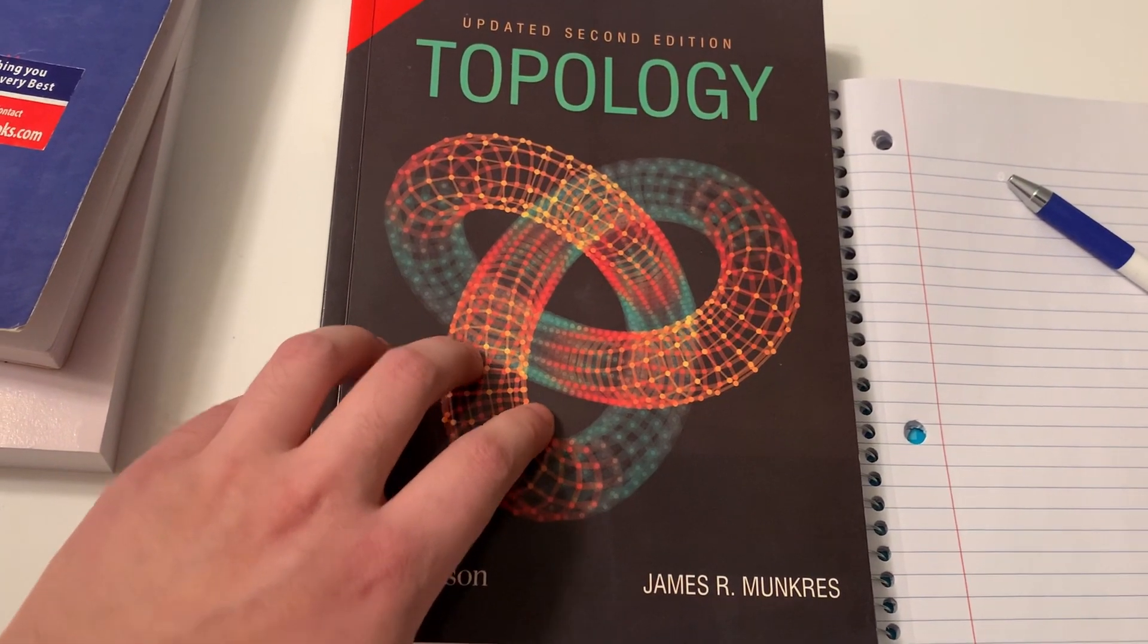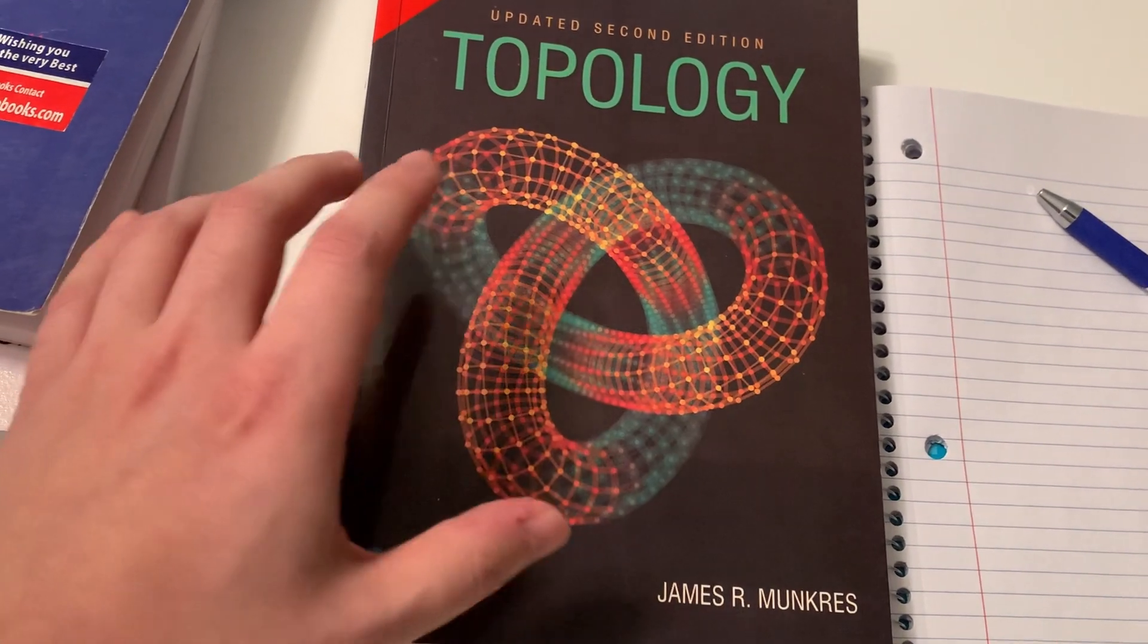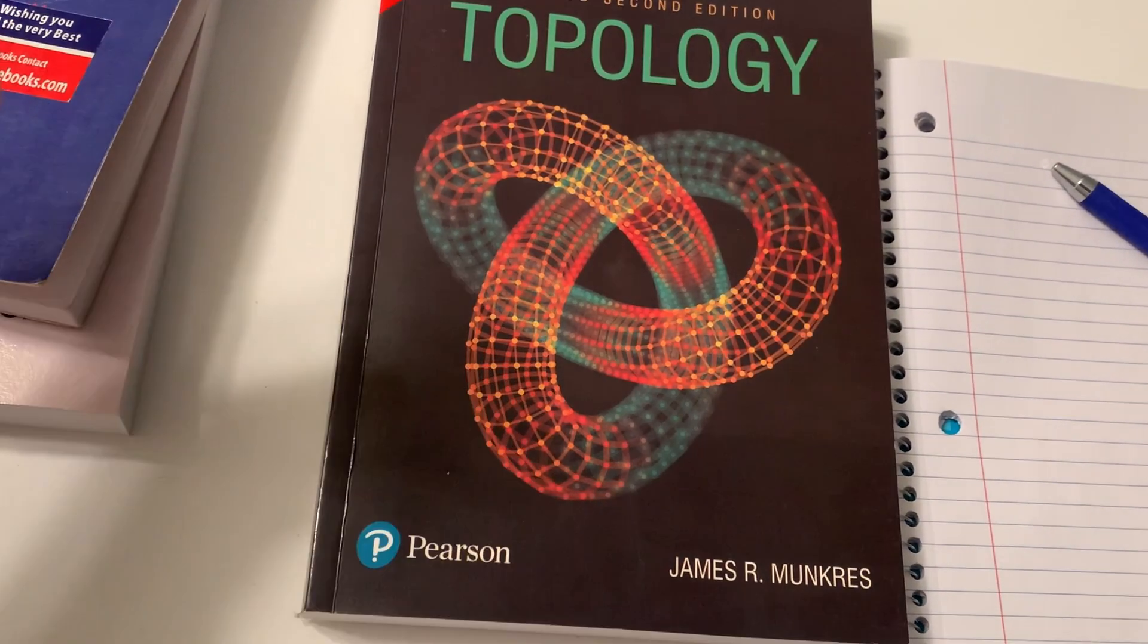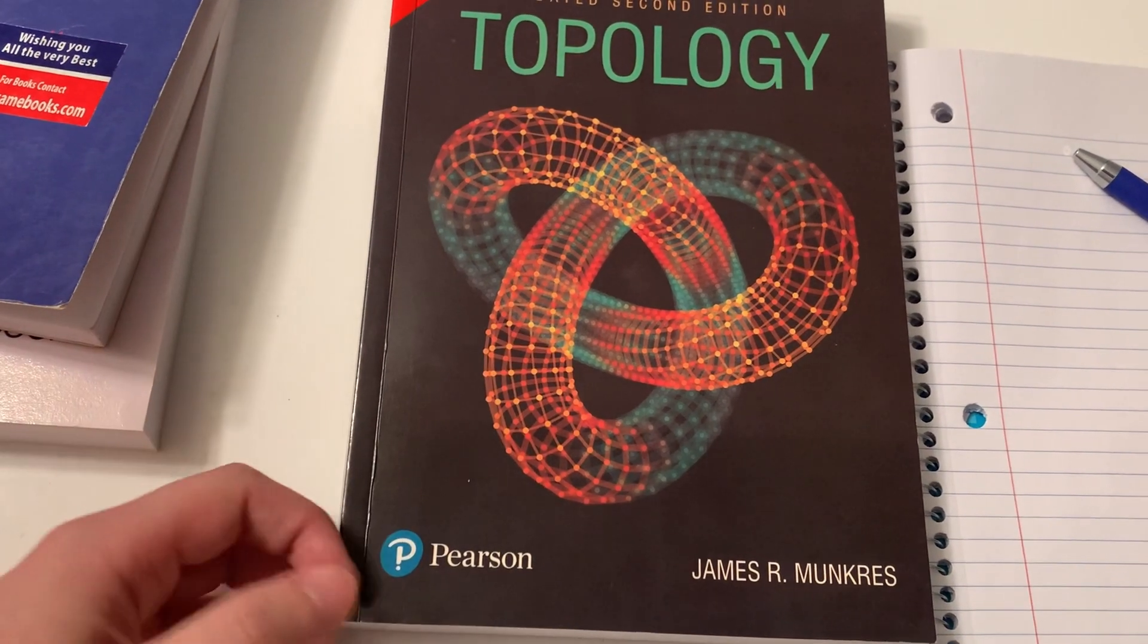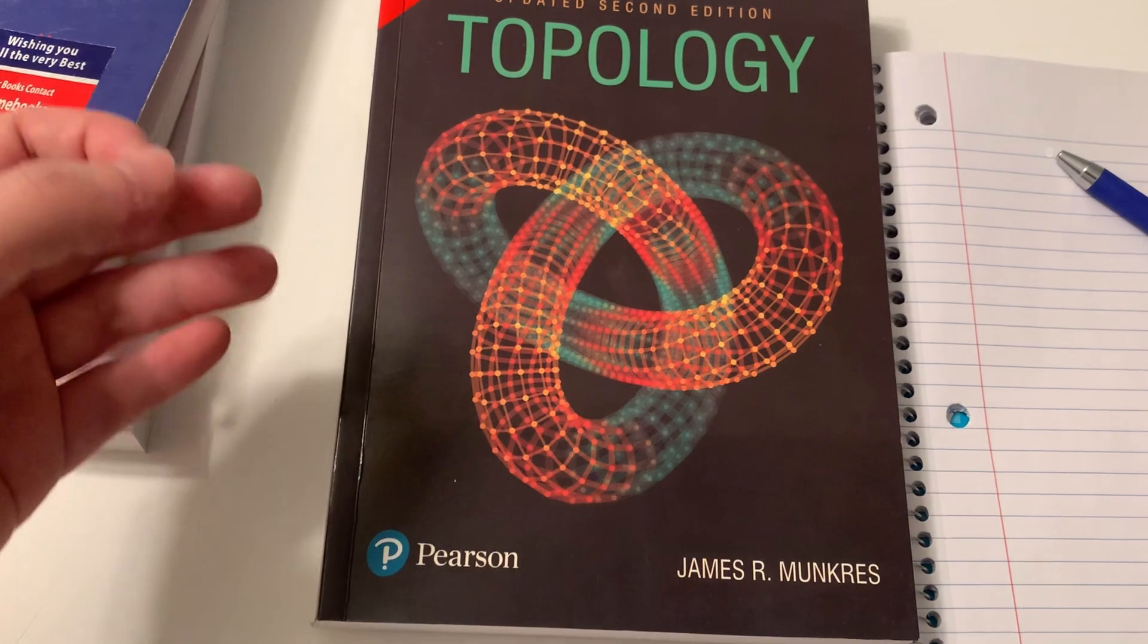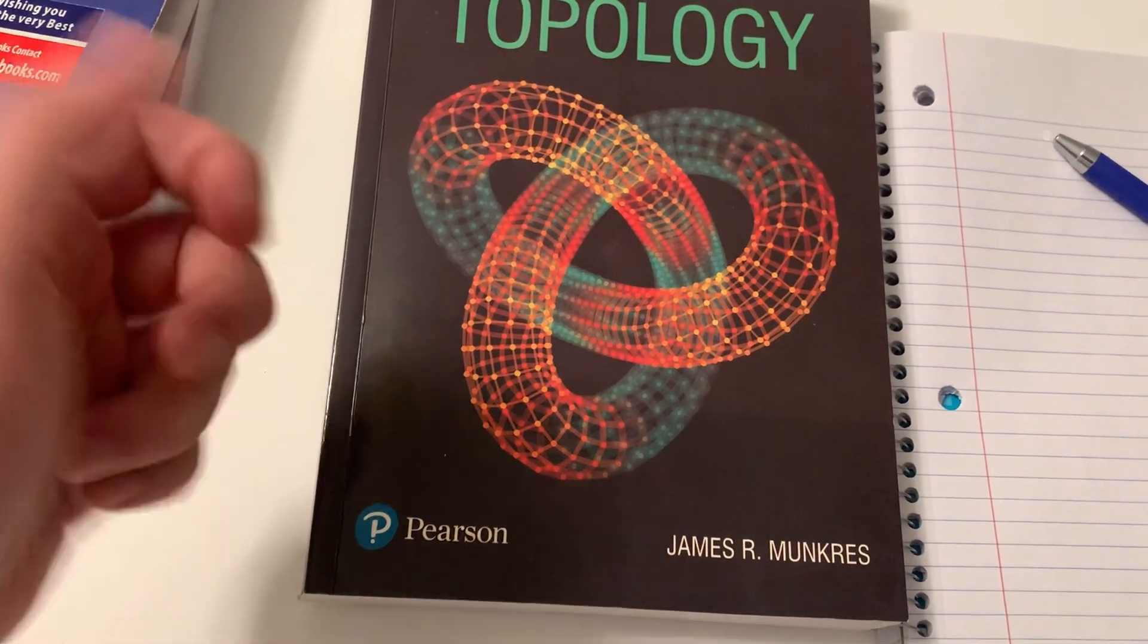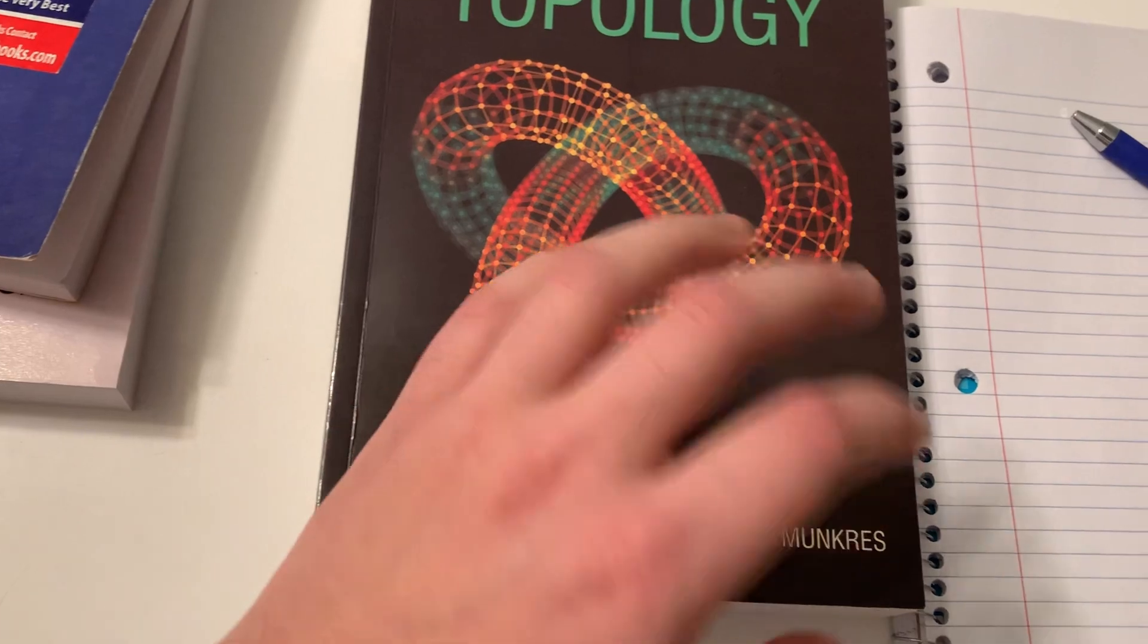So in the first book, Topology by Munkres, every exercise is at the end of each section. This, in my opinion, is the most user friendly way of organizing exercises, because you will know which exercise is relevant to which section. This makes cross-referencing particularly easy.